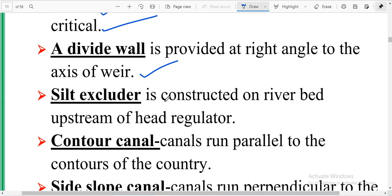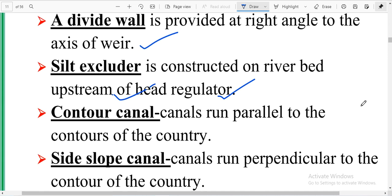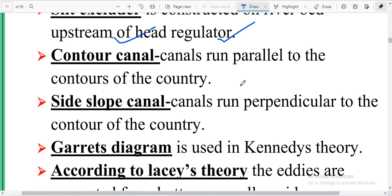Divide wall is provided right angle to access of the weir. Silt excluder is the construction on the riverbed upstream of head regulator. Control canals run parallel to the contours of the country. Side slope canals run perpendicular to the contour.